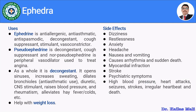Regarding uses: ephedrine is an anti-allergenic, anti-asthmatic, anti-spasmodic, decongestant, cough suppressant, stimulant, and vasoconstrictor. Pseudoephedrine has decongestant and cough suppression properties. Nor-pseudoephedrine is a peripheral vasodilator used to treat angina.